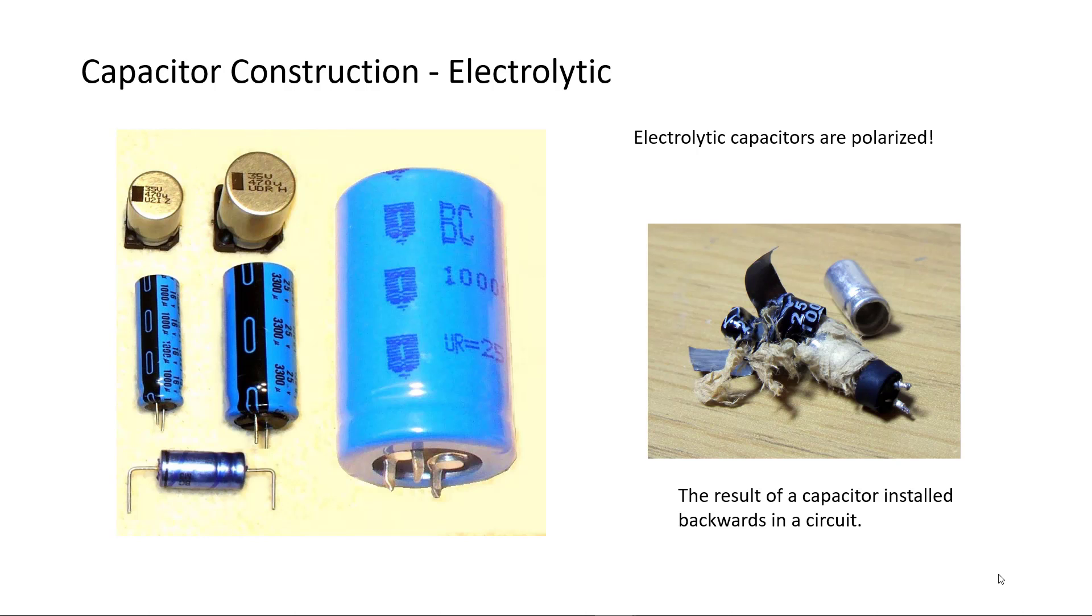Electrolytic caps that are installed backwards will create gases that will vent out through vent holes or weakened areas. In some cases the results can be quite violent.